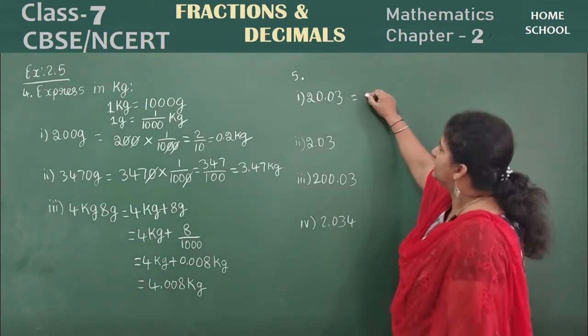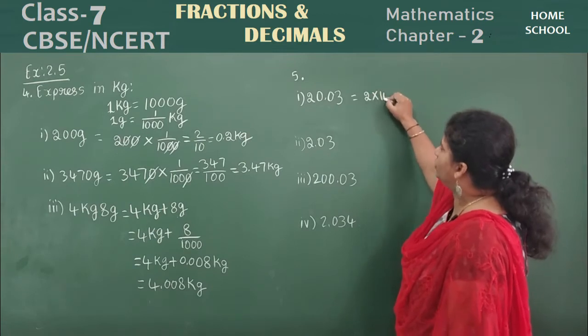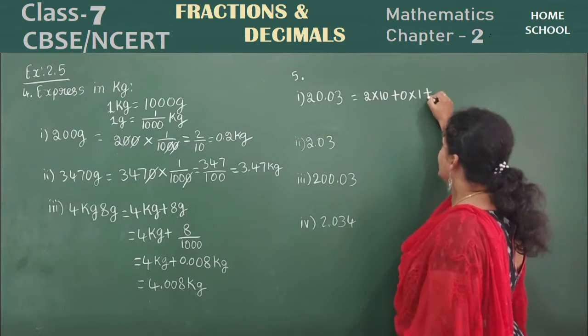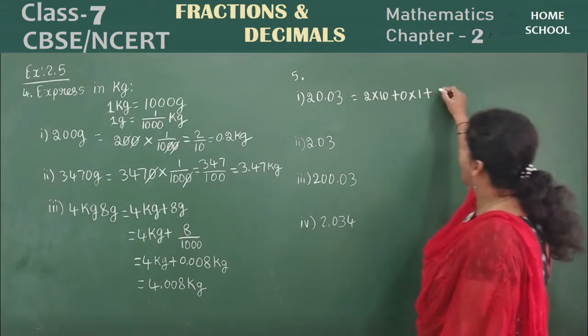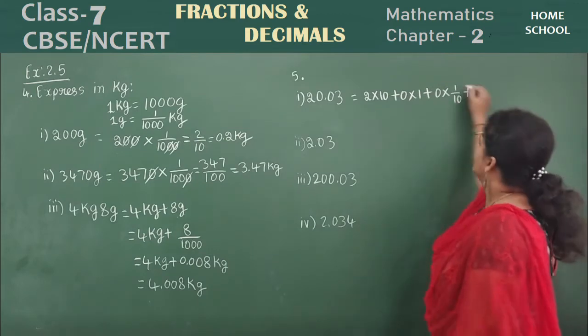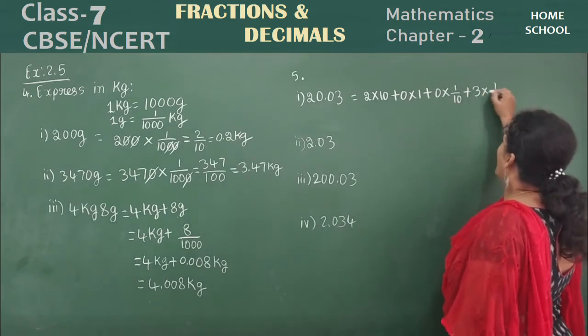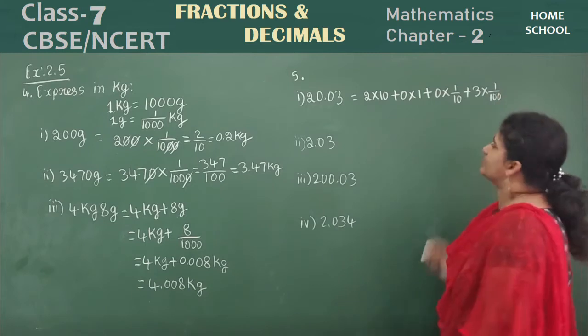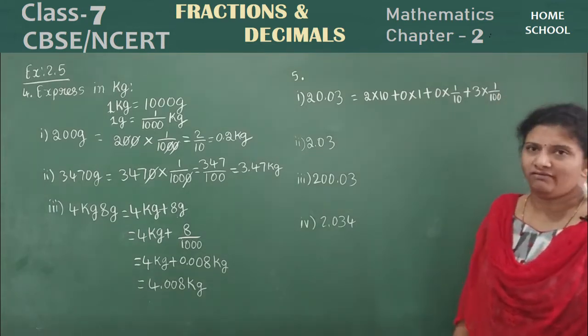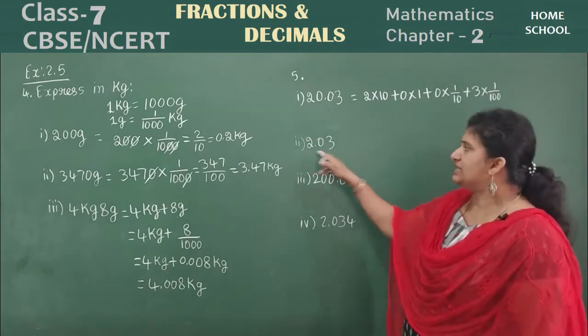So now split this one. 2 is in which place? Tens place. 2 into 10 plus 0 into 1 plus 0 into 1 by 10 plus 3 into hundredth place it is, right? So this is the way we need to split this decimal values.